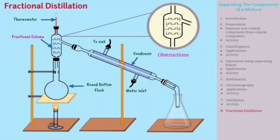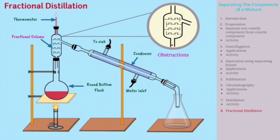Due to the obstructions in the fractionating column, the liquid with the higher boiling point condenses back down into the flask, while the liquid with the lower boiling point reaches the condenser and is collected in a container. Hence, the liquids get separated.